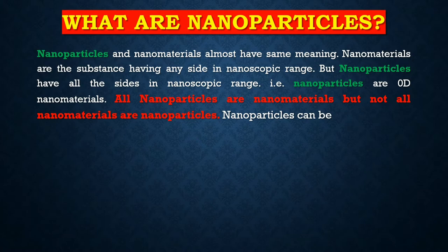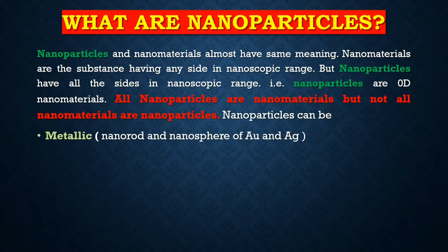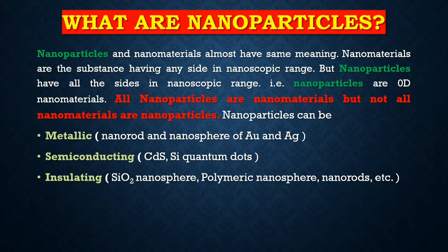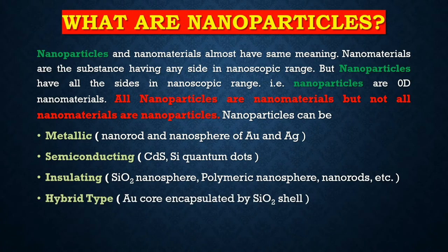Nanoparticles can be metallic — for example, nanorods and nanospheres of gold and silver. They can be semiconducting — for example, cadmium sulfide or silicon quantum dots. They can be insulating — like silicon dioxide nanospheres and polymeric nanorods. There are also hybrid-type nanoparticles, such as a gold core encapsulated by silicon dioxide. So there are different types of nanoparticles.